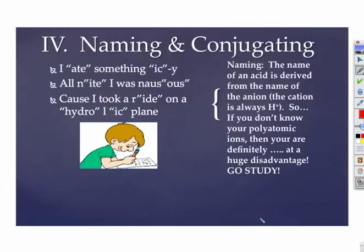Let's do a very quick review of naming and conjugating. Conjugating is the unique part; the naming is the review part. One of my students came up with this: "I ate something icky." So if your polyatomic ends in -ate, then the acid's going to end in -ic, whether it's per-ate or regular -ate. If your polyatomic ends in -ite, then your acid ends in -ous. And all of them carry the last name acid. That word acid tells us that the cation is an H⁺.